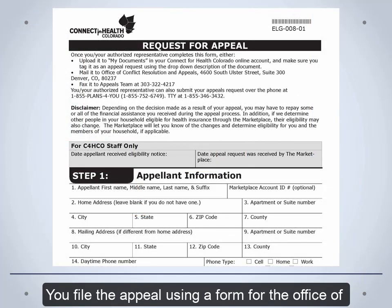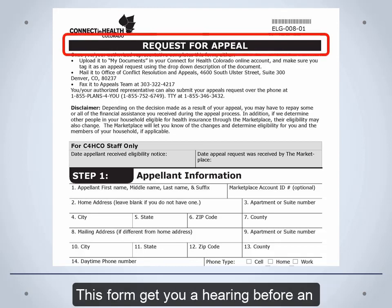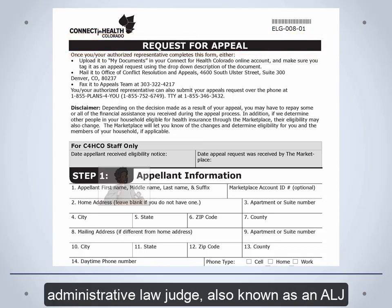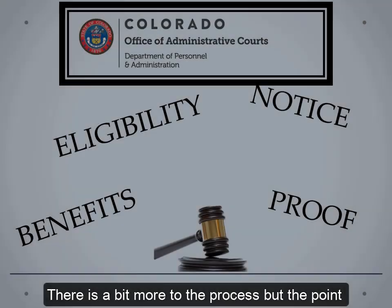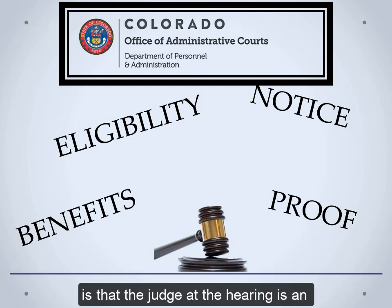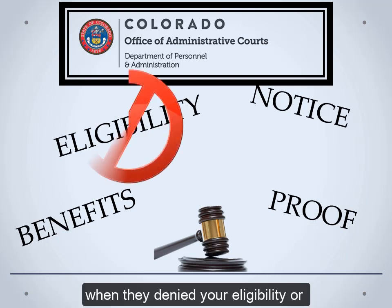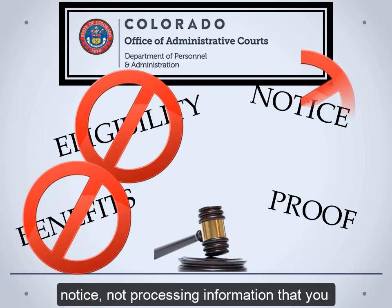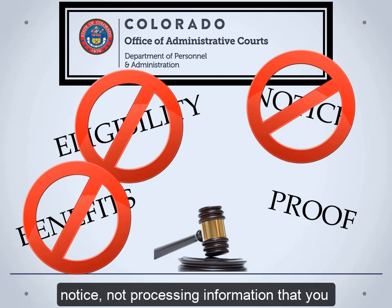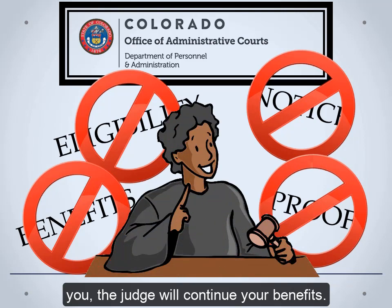You file the appeal using a form for the Office of Administrative Courts, which looks like this. This form gets you a hearing before an administrative law judge, also known as an ALJ. The judge at the hearing is an independent person who will hear the case and decide if the government did right when they denied your eligibility or discontinued your benefits. If they did wrong by not giving you proper notice, not processing information that you provided, or ignoring other proof provided by you, the judge will continue your benefits.